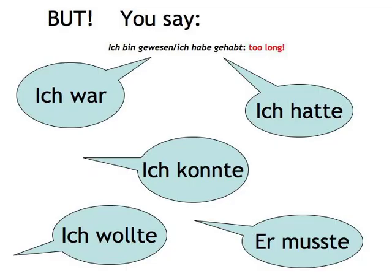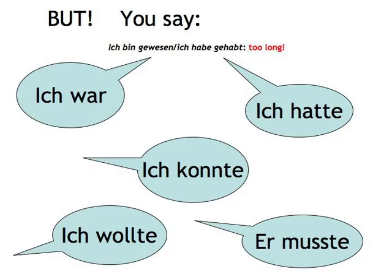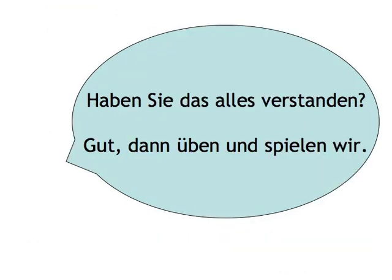The only exceptions are the verbs sein and haben, where we tend to always use the simple past, as 'Ich bin gewesen' and 'Ich habe gehabt' are simply too cumbersome compared to the simple 'Ich war' and 'Ich hatte.' The modal verbs are mostly used in this simple past form too: Ich konnte, Ich wollte, Er musste. Haben Sie das alles verstanden? Gut, dann üben und spielen wir.